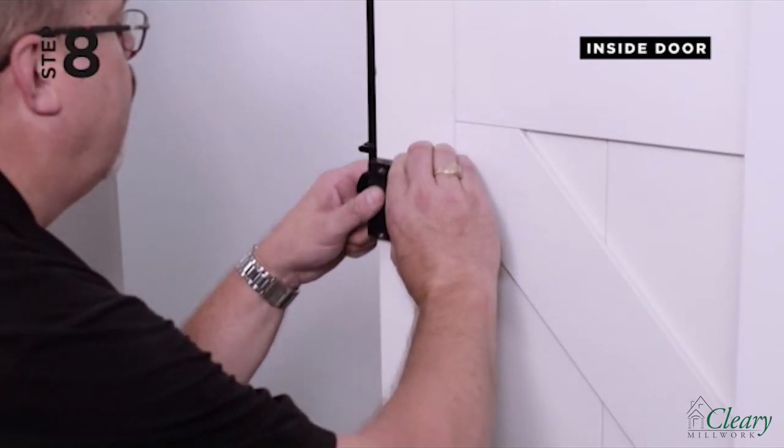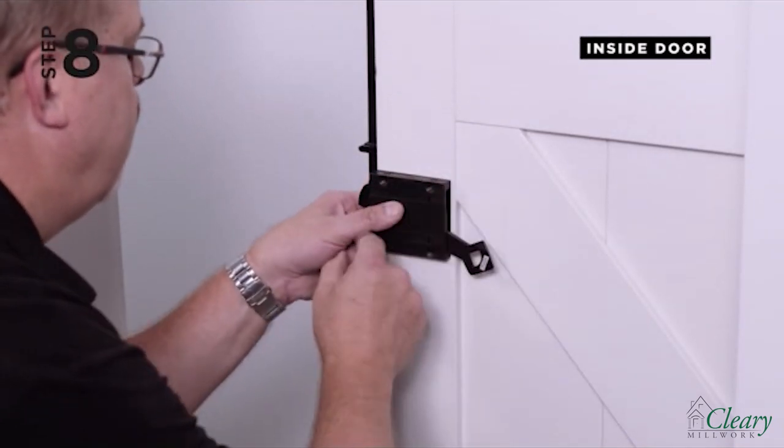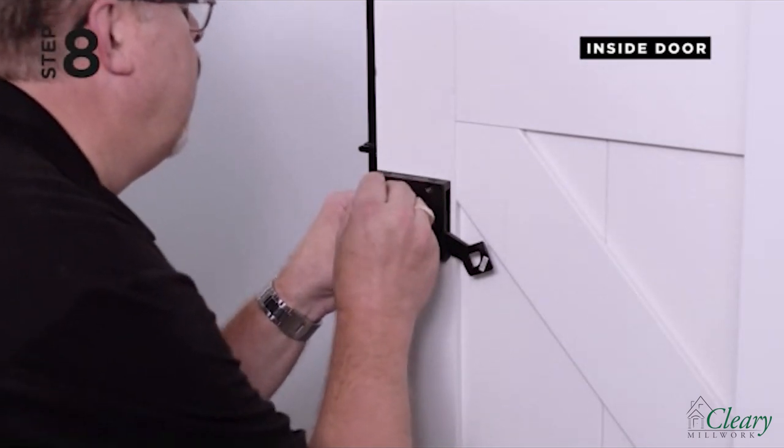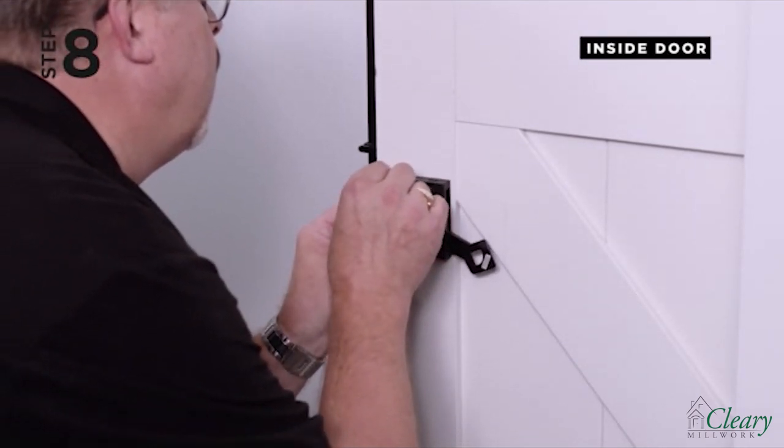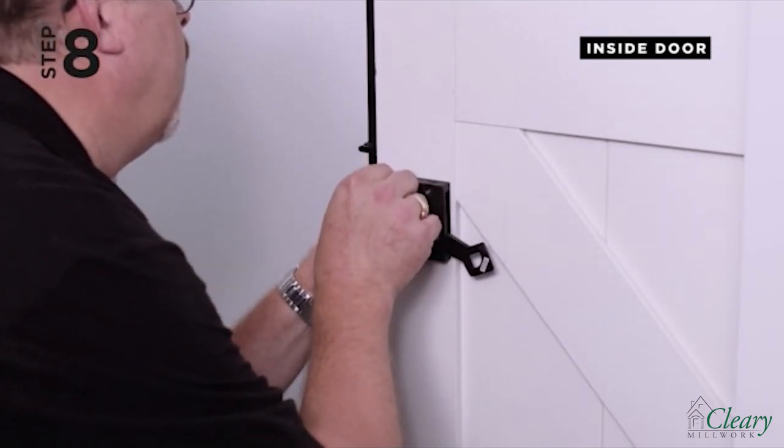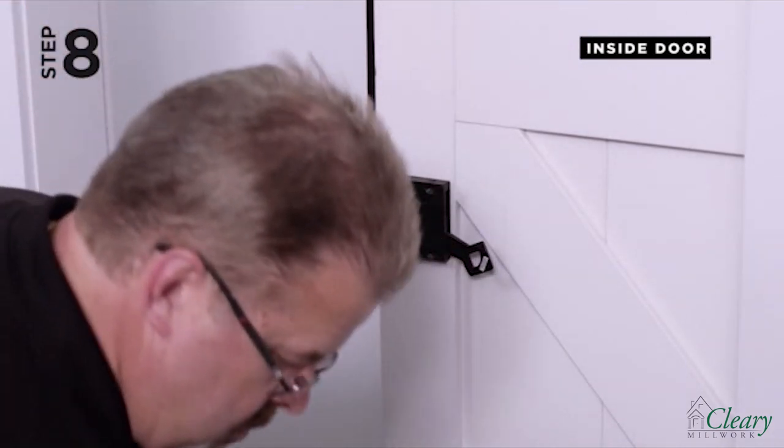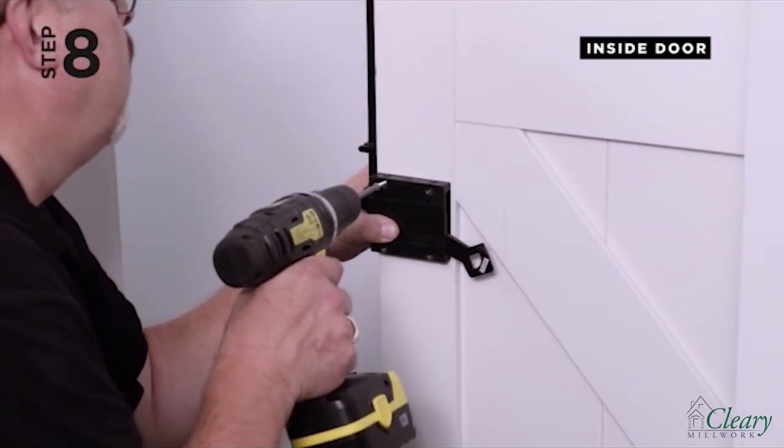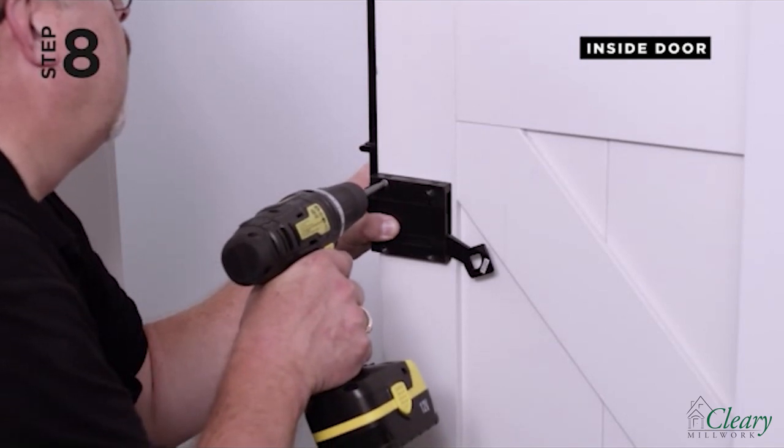Step 8. Position the handle assembly on the door ensuring the handle is in the lowered position as shown and the engagement pin is located in the slot of the handle. Affix the handle assembly to the pre-drilled holes in the door using the screws provided.